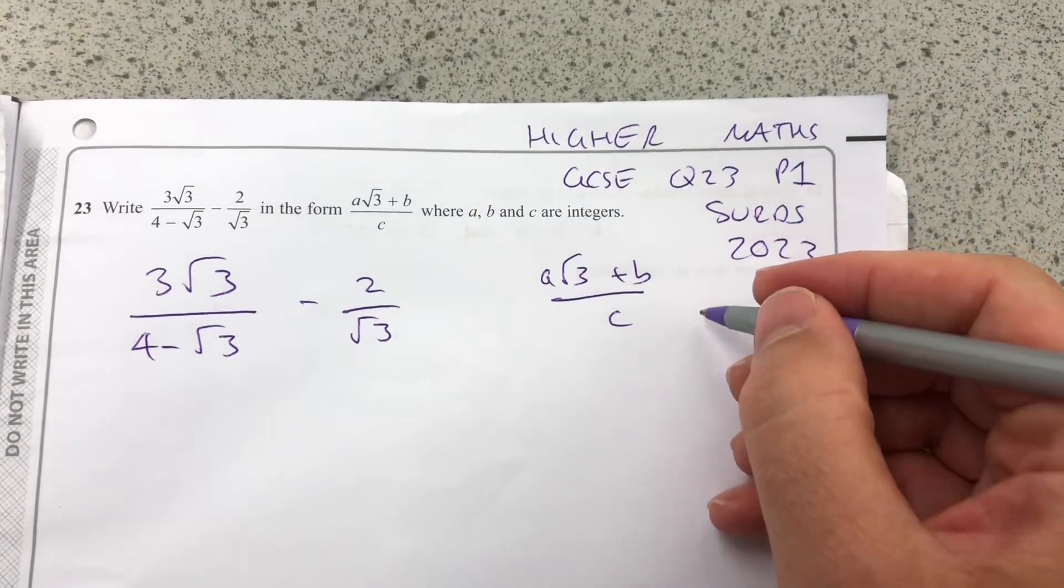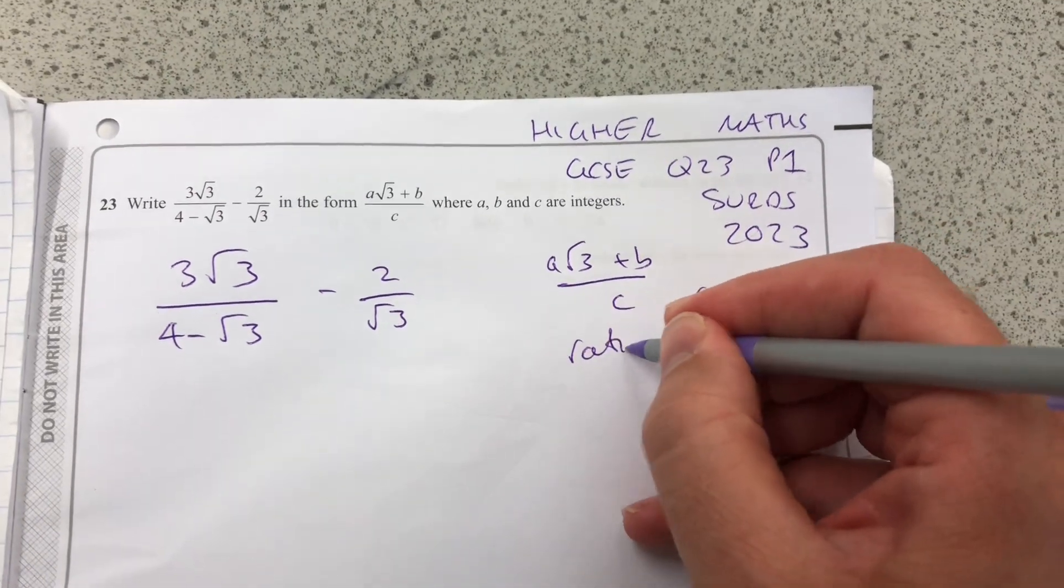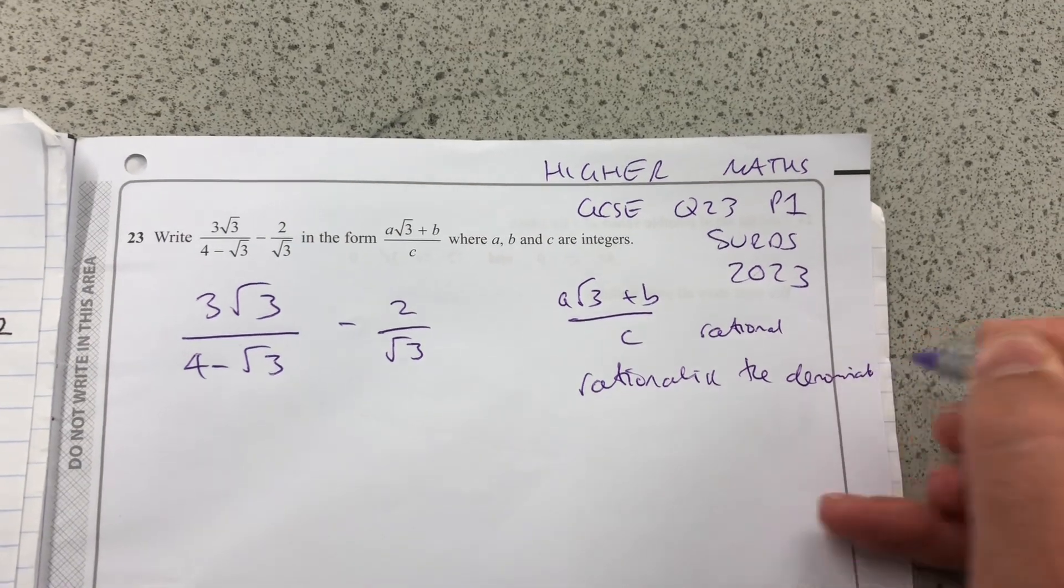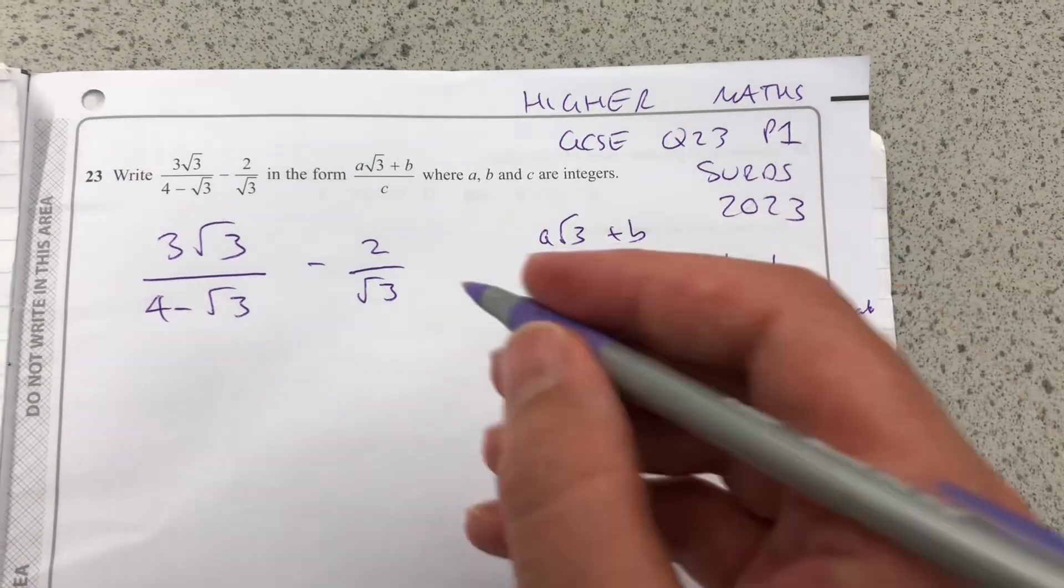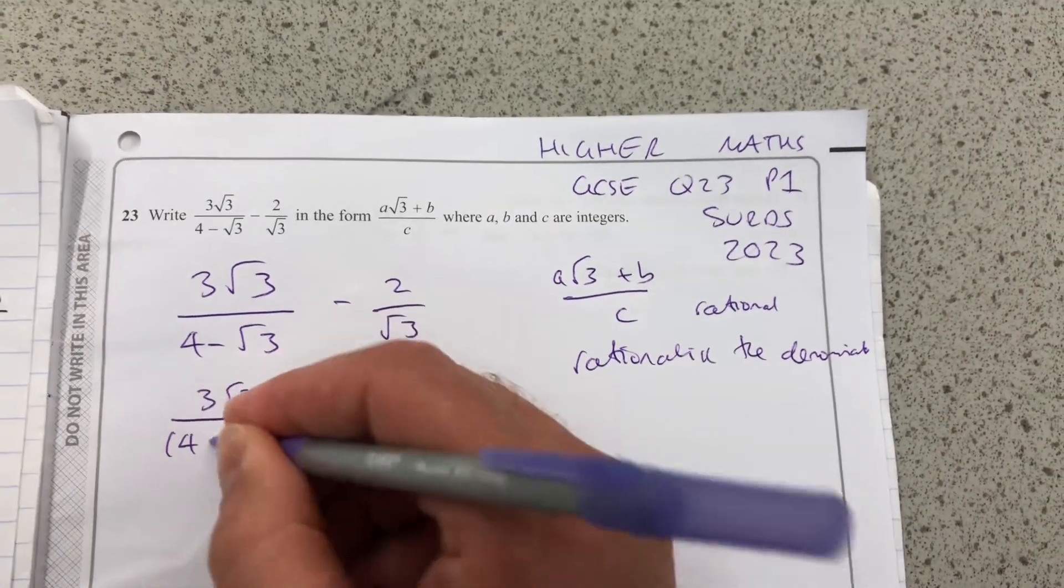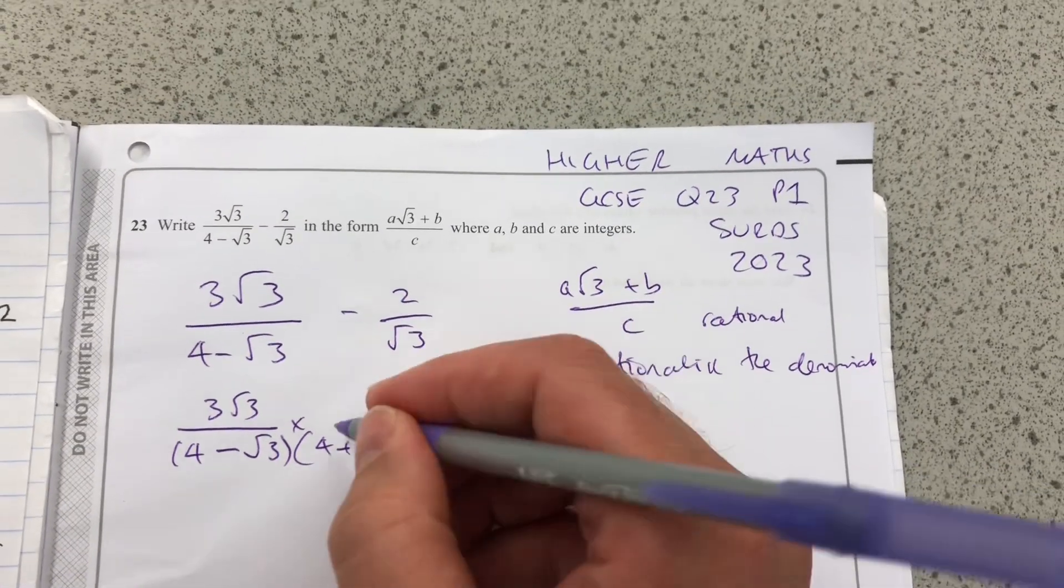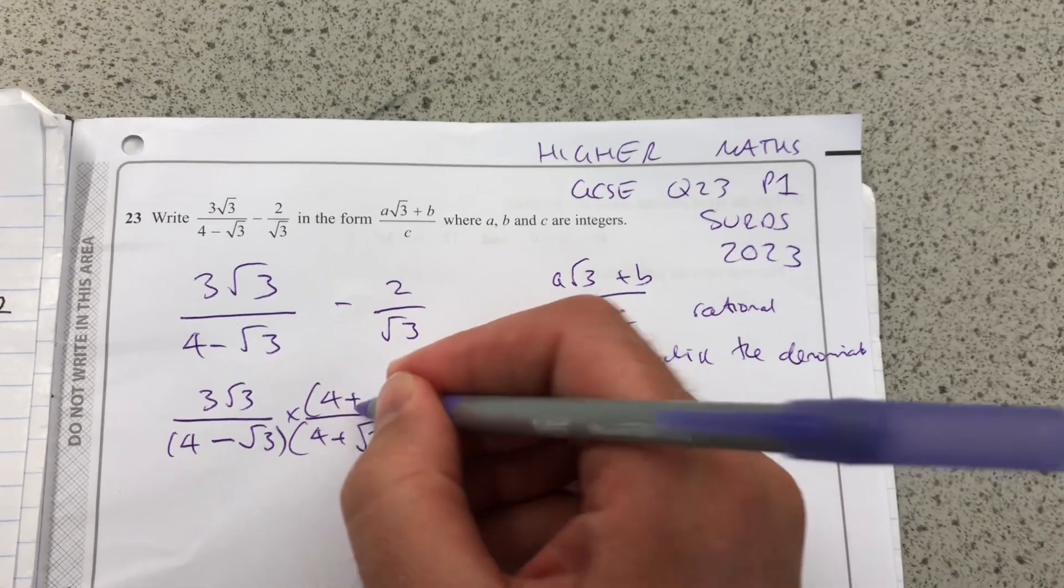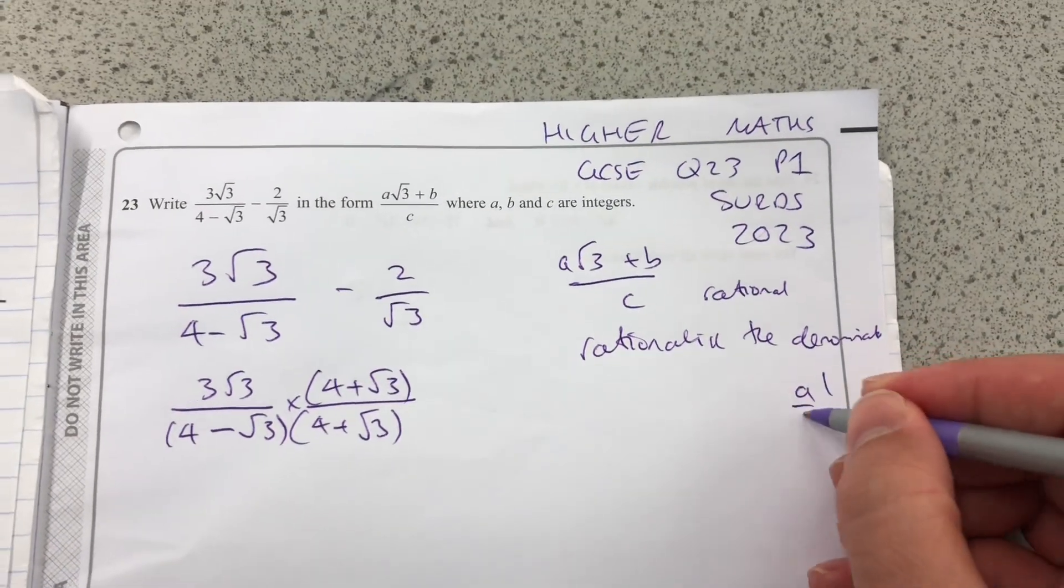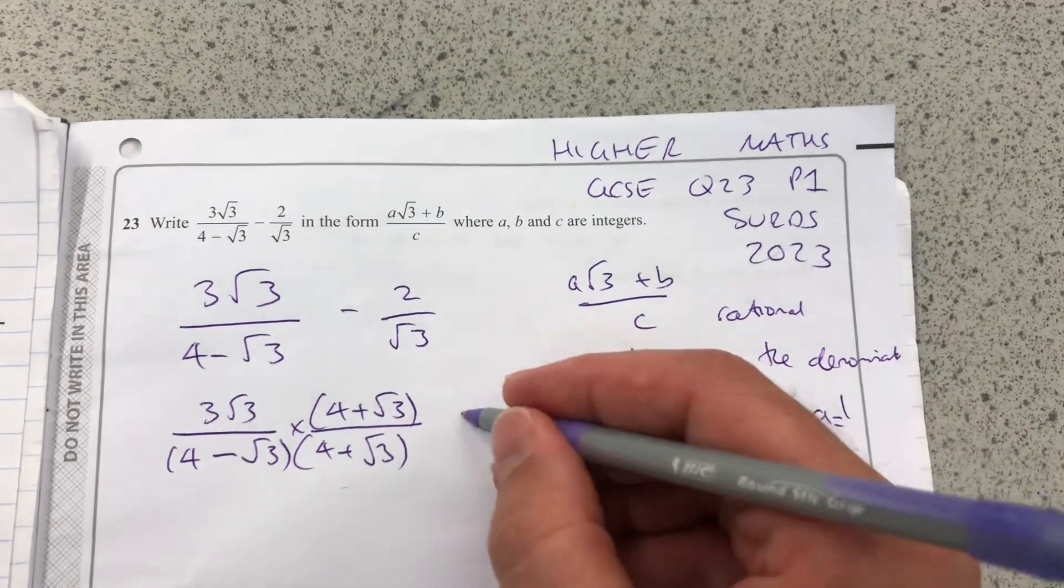The main point to see here is that we need a rational denominator with no surds, so what we need to do is rationalize the denominator. To do that, in each case, I'm going to multiply 3 root 3 over 4 minus 3 root 3 by its conjugate, changing the sign of that surd. But I must make sure that the numerator is also multiplied, so that I'm multiplying it, in effect, by 1. Anything over itself is 1, so I'm not changing anything. I'll do the same thing here.